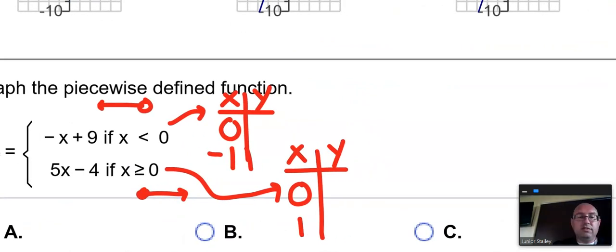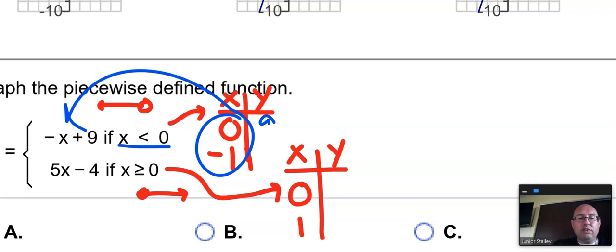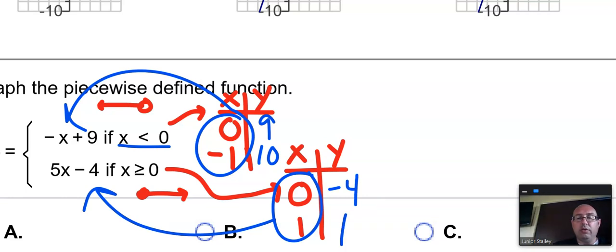Okay. Let's see if we can do this. So, I chose 0, something smaller, plug them in. 0, that 0 gives me 9, negative 1 gives me 10. 0, and something bigger, I plug those in, and 0 gives me negative 4, and 1 gives me 5 minus 4 is 1.